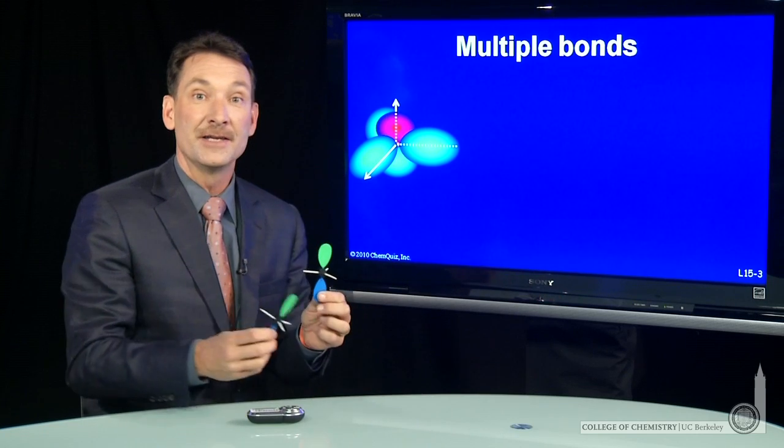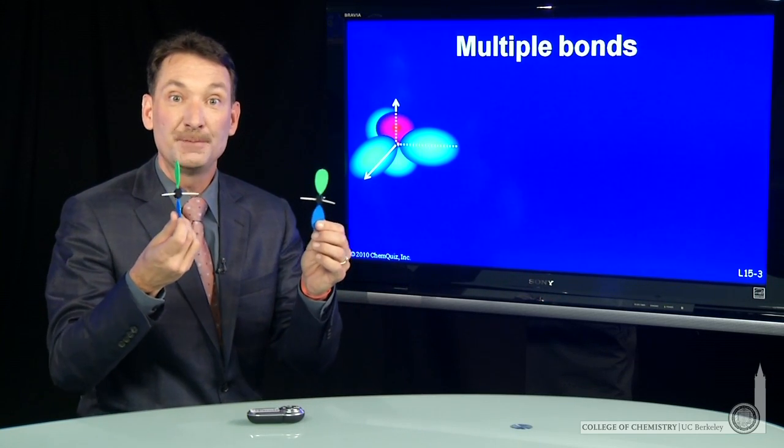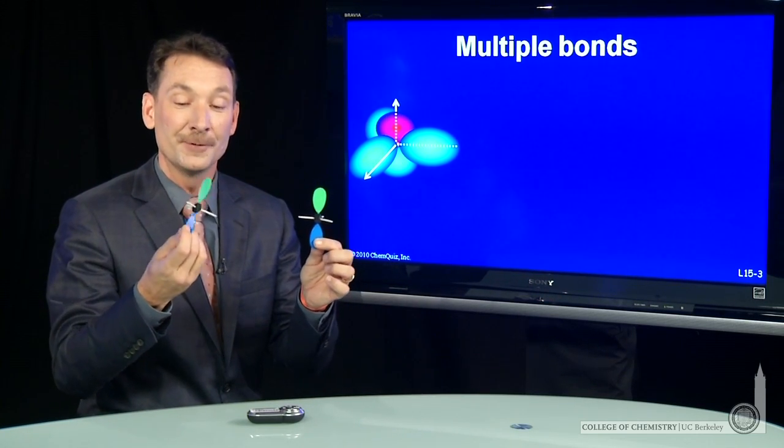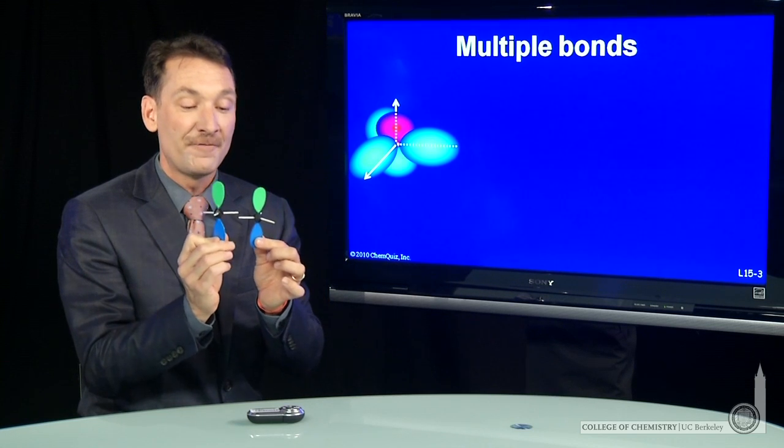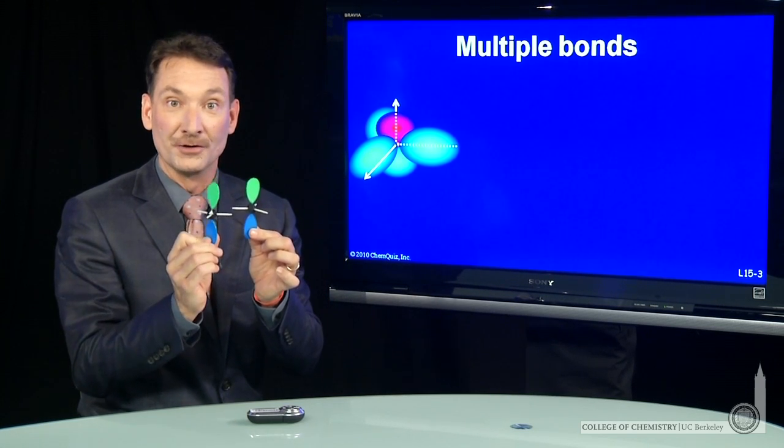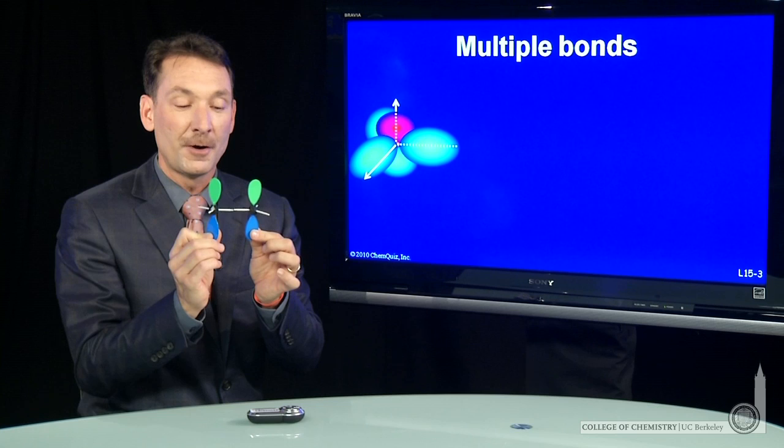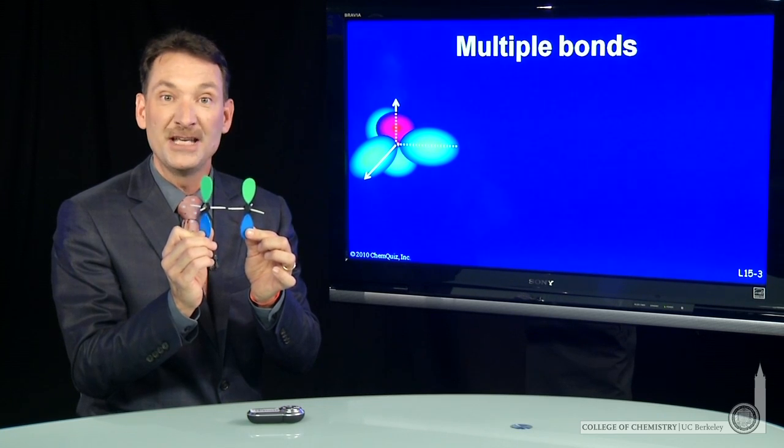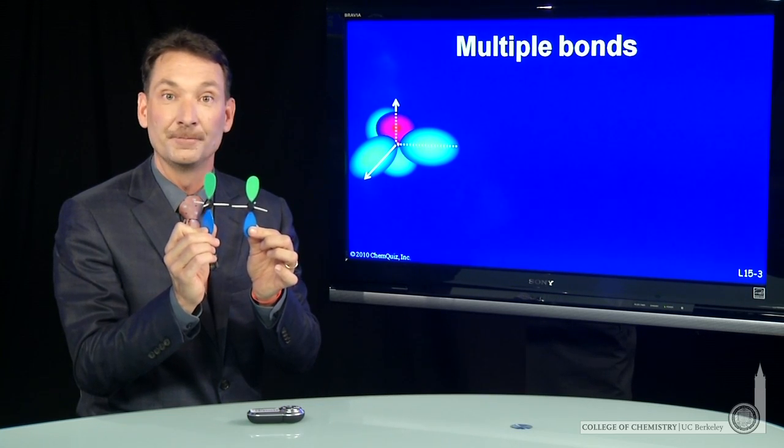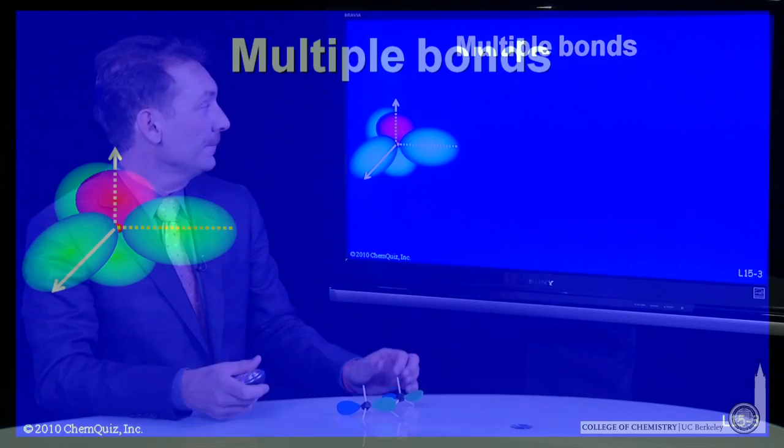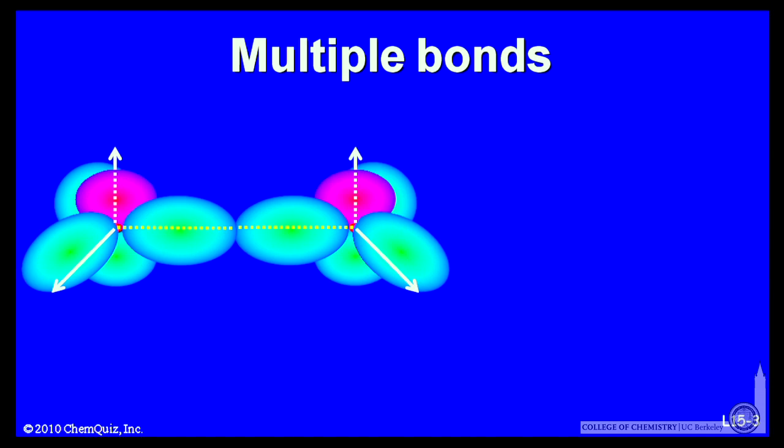So if I'm going to bond two sp2 hybridized carbons together, they can come together and form molecular orbitals from their hybrid sp2 orbitals and bond together. So that's what I've drawn here. I have one sp2 hybridized carbon. Here's another sp2 hybridized carbon.